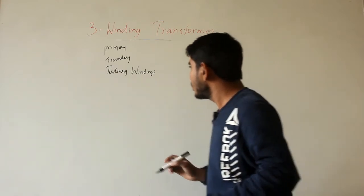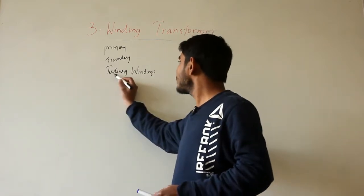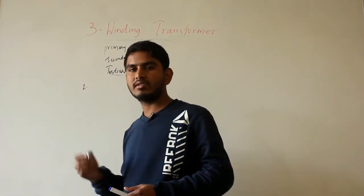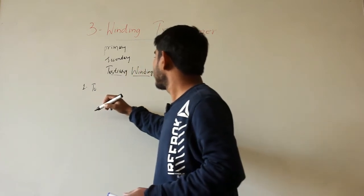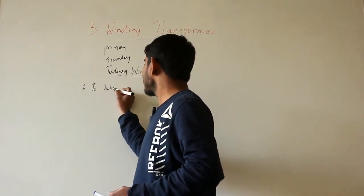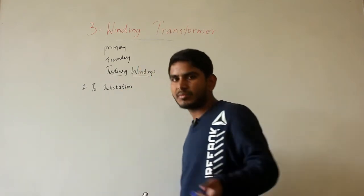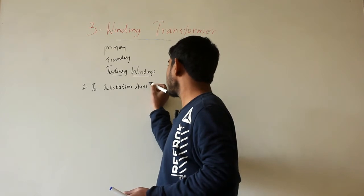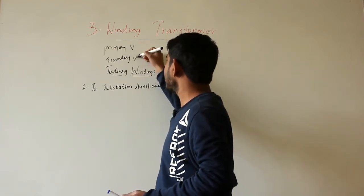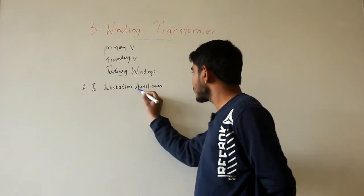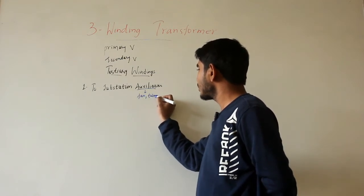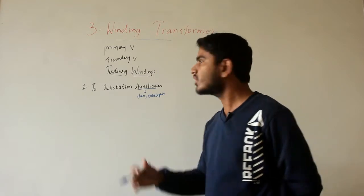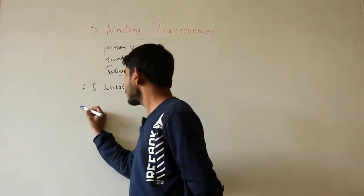The first purpose of employing a tertiary winding is that it can serve to supply the substation auxiliaries at a voltage which is different from the primary voltage and the secondary voltage. The substation auxiliaries may be fans, tube lights, and so on. So in order to supply these auxiliaries at a different voltage, the tertiary winding is used. The second purpose is to supply phase-compensating devices.